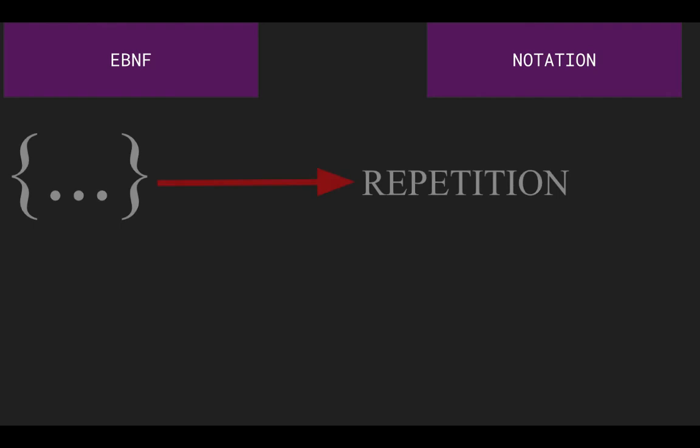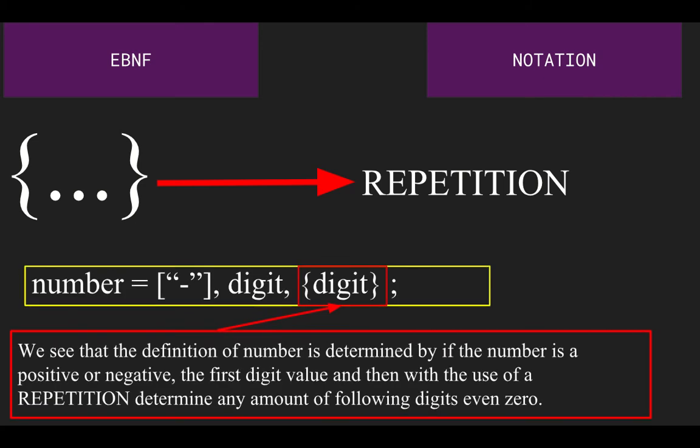Next, we're going to have curly brackets that are named repetition, which are used when typically a non-terminal determines any amount of the following digits, including 0. These are good to use when dealing with definitions that may have a large numerical value or are going to be repeated.